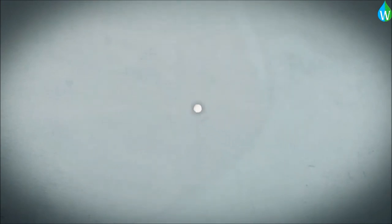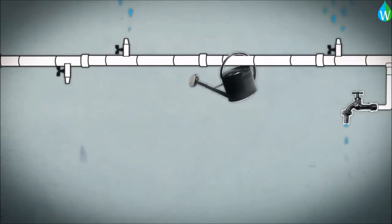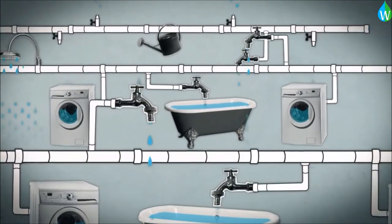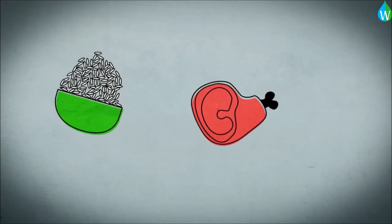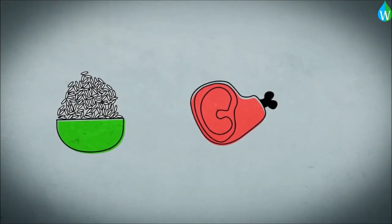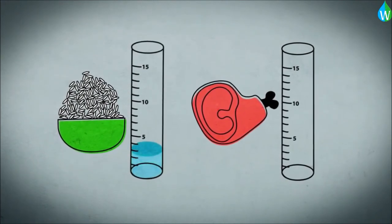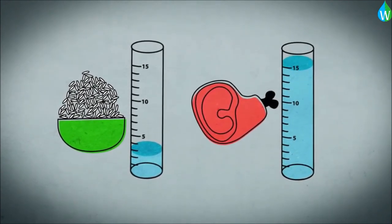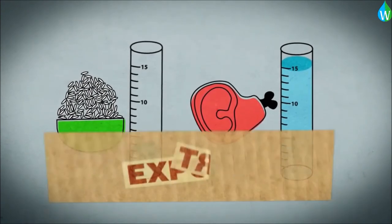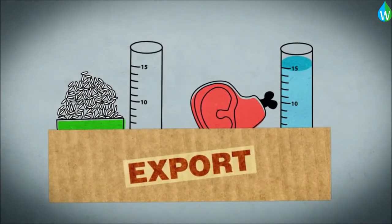Three main problems can be observed. First, the overuse of water through inefficient irrigation systems and waste, population growth, and changing consumer behavior. People are eating more and more meat. Compared to vegetable products, animal products require much more water to produce. 2,500 liters of water are required to grow one kilogram of rice; one kilogram of beef requires 15,000 liters. Such water-intensive products are often exported from developing and emerging countries to industrialized countries.